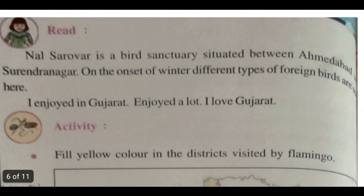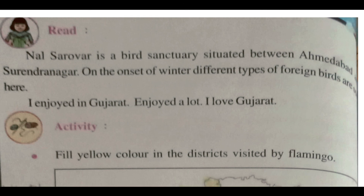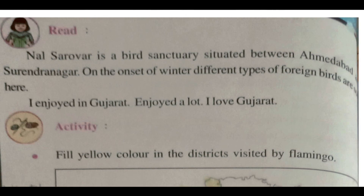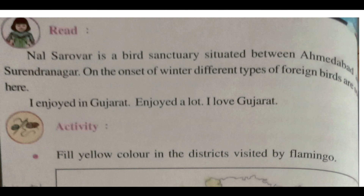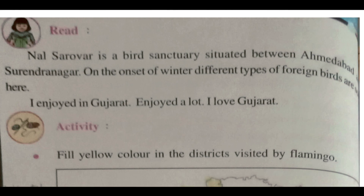Nalsarovar is a bird sanctuary situated between Ahmedabad and Surendranagar. At the onset of winter, different types of foreign birds can be seen there. At the end, Flamingo says, I enjoyed Gujarat a lot — I love Gujarat.